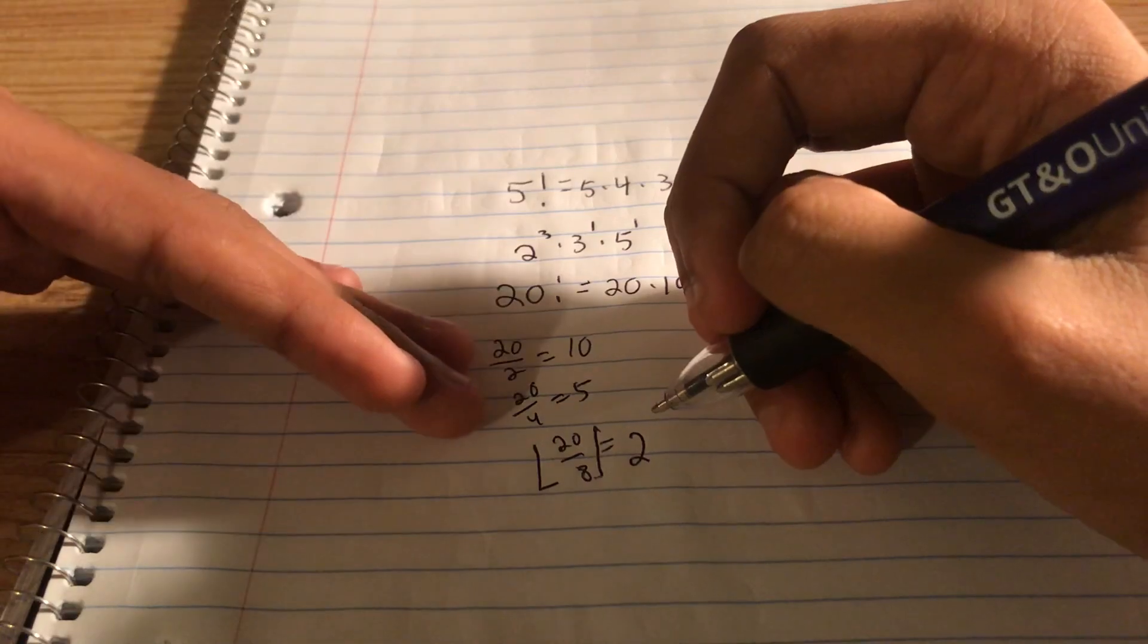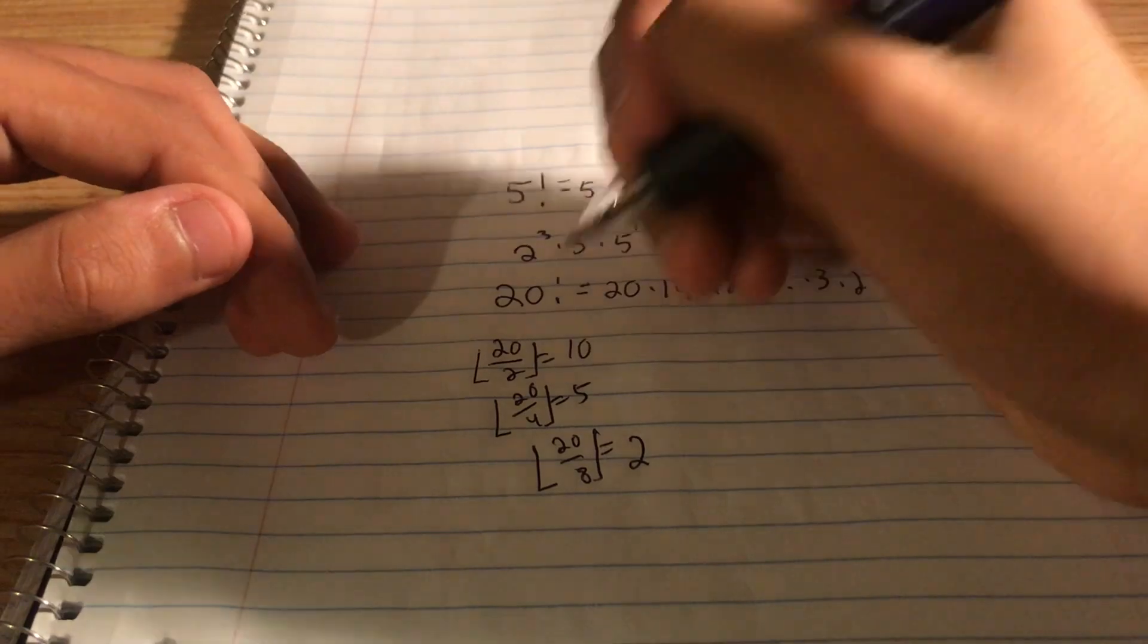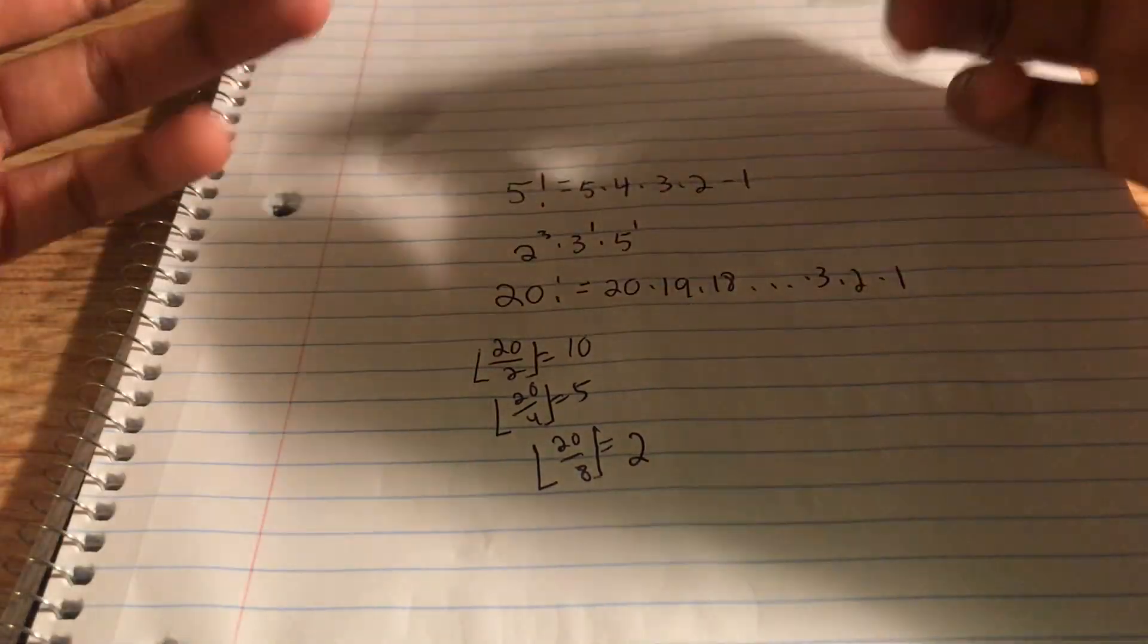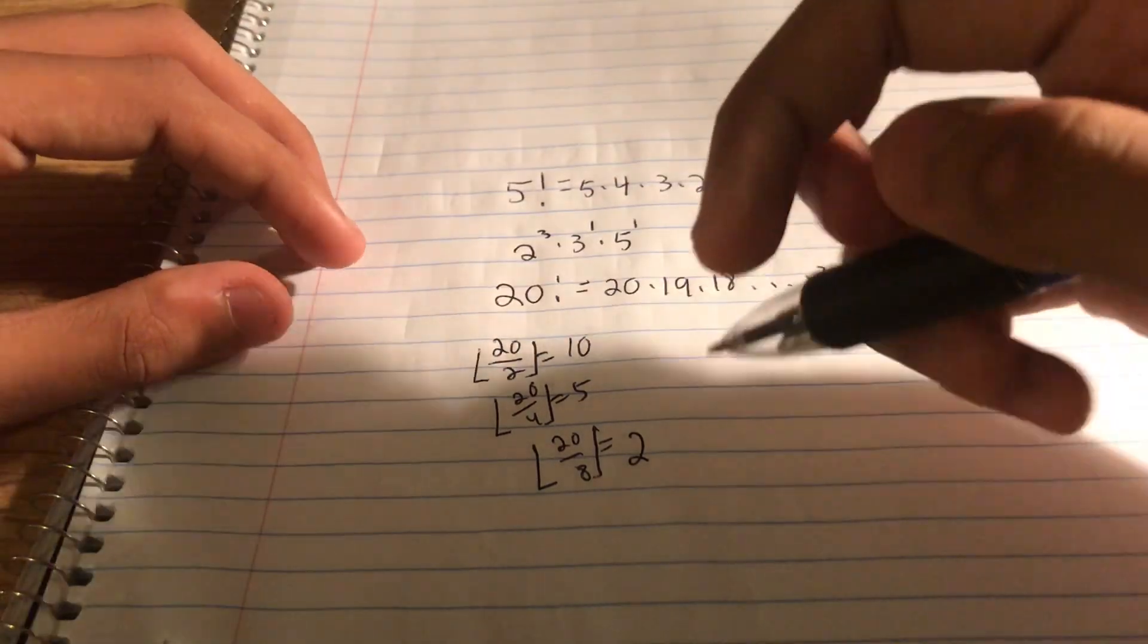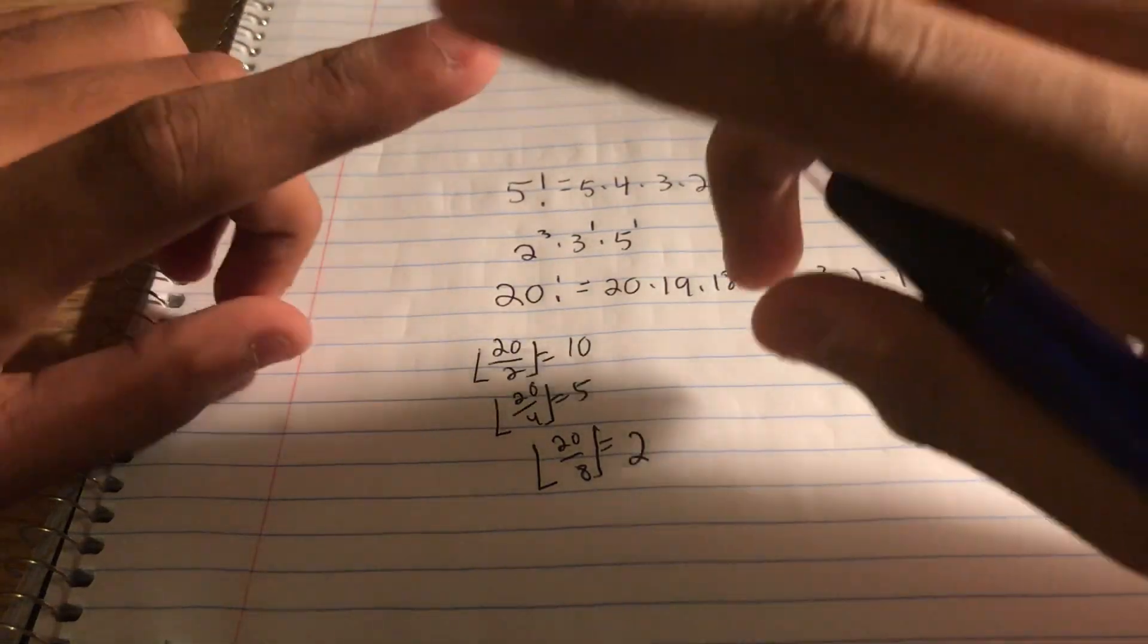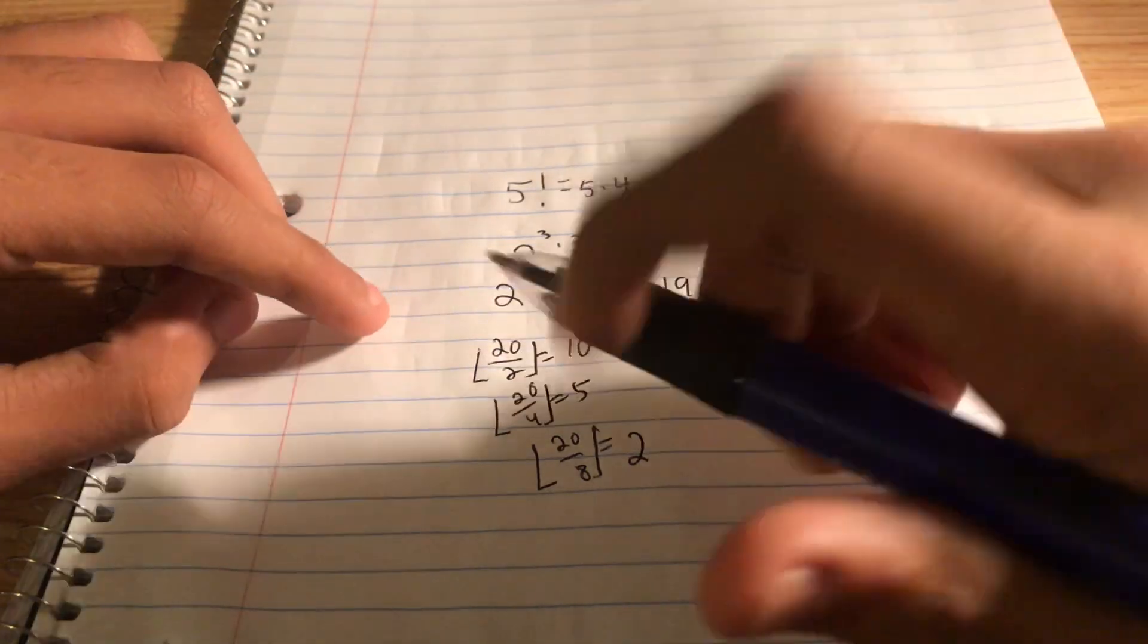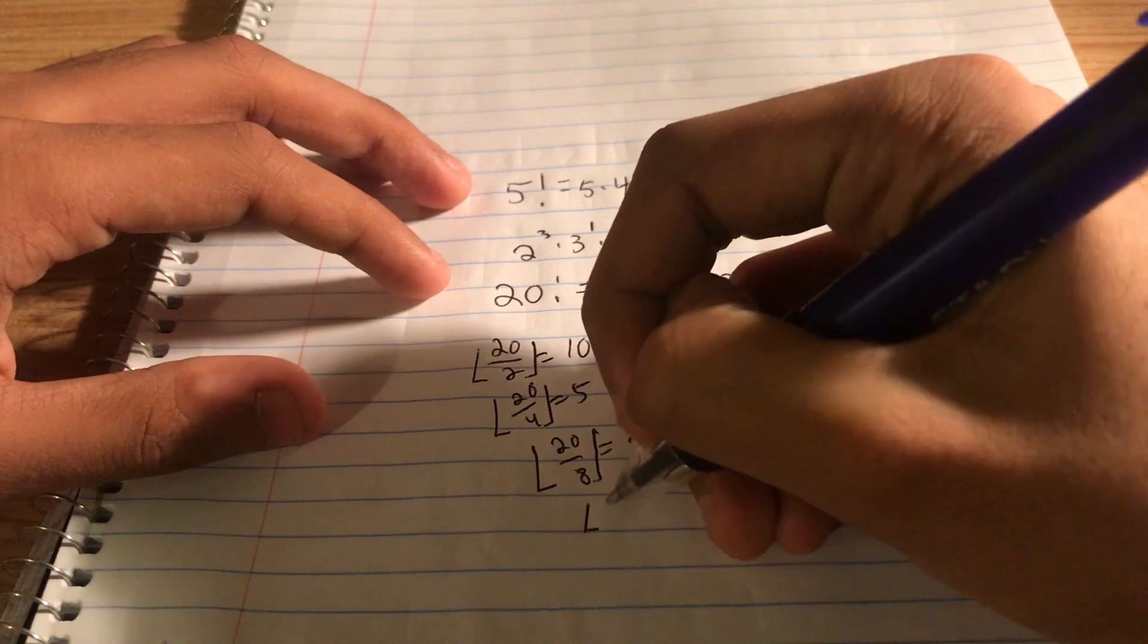In fact, we can put floor functions on all of these. Because the floor function of an integer is just that integer. The floor function of that integer point something is just that integer. So now we have the powers of 2, 4, 8, and oh, don't forget, 16. 16 is 2 to the power of 4. So there's an extra power of 2 there.